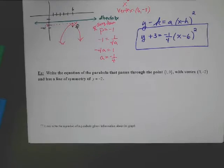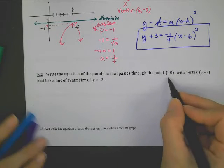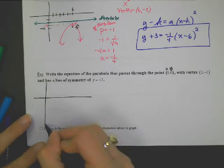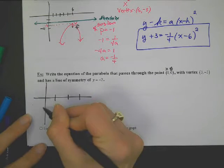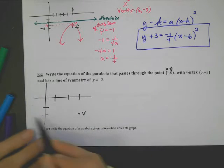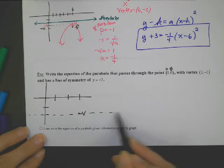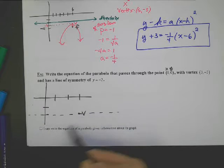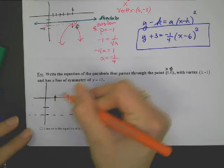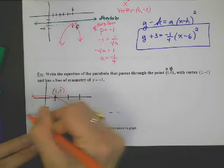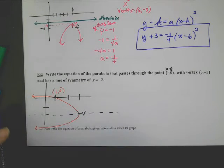Okay, last one. Write the equation of a parabola that passes through a point — remember, a point is like an x comma y. The vertex is (3, negative 2). It has a line of symmetry: y equals negative 2. That means the parabola must be going either left or right. It also tells us there's a point (1, 0), which is just a random point. So the vertex is here and the parabola must be going like this, being sliced down the middle.